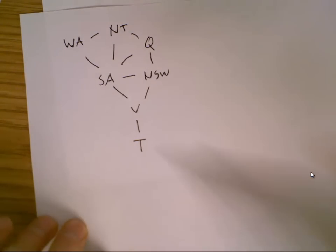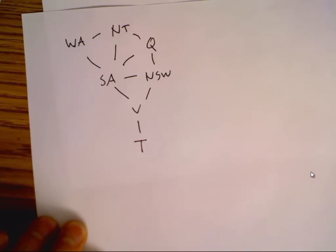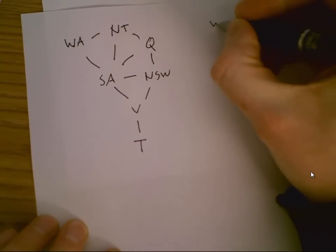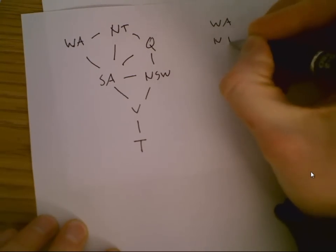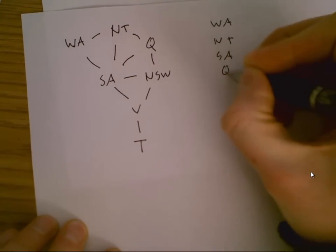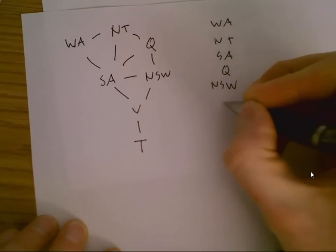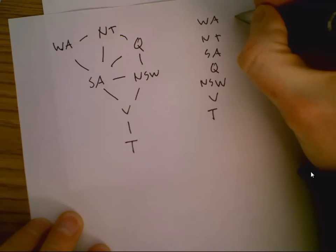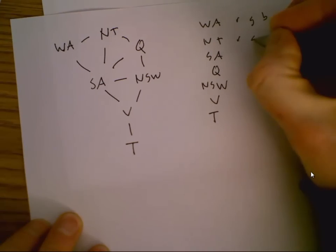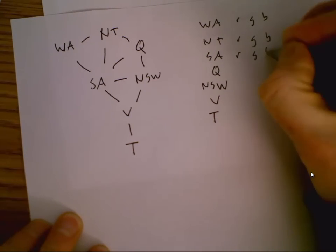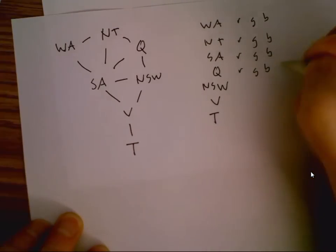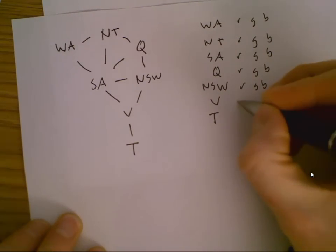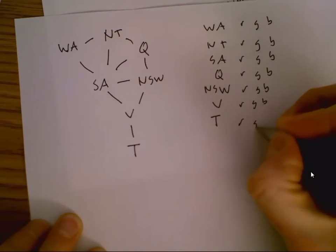Southern Australia touches almost all the other territories in Australia, except for Tasmania, which is an island. Let's draw the domains of the variables. Since we're doing map coloring, the values for each territory are the color assigned to it. We're going to consider three possible colors — red, green, blue — and we have those for each variable.